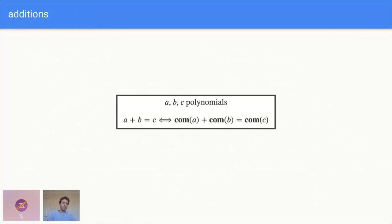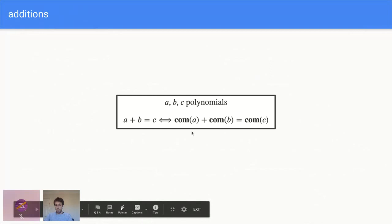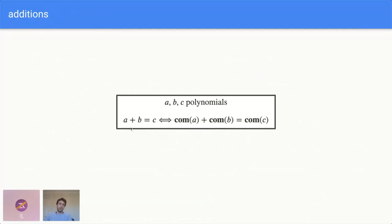For additions: given three polynomials A, B, and C with the prover having committed to them, the verifier wants to be convinced that A plus B equals C as polynomials — point-wise addition of coefficients in the Lagrange basis. KZG has the superpower of linear homomorphism, so you just need to check that commitment(A) plus commitment(B) equals commitment(C), which convinces you that A plus B equals C.